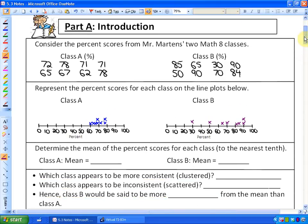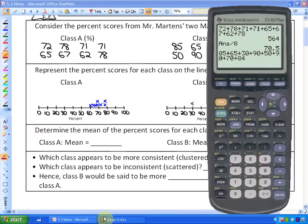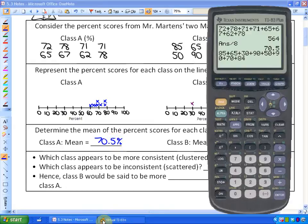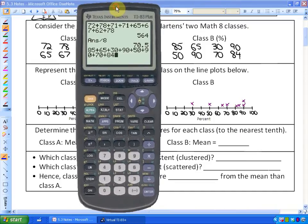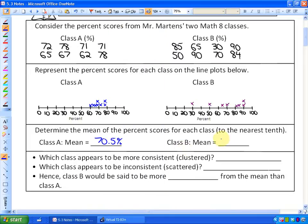At any point if you want to pause this, you can try and calculate things on your own. Determine the mean of the percent scores for each class. I've added up all eight scores for the first class and divided by eight. The mean was 70.5%. For class B, I've put these eight scores here. If I hit equals and divide by eight, the average for class B was also 70.5%. So both classes had the same average.